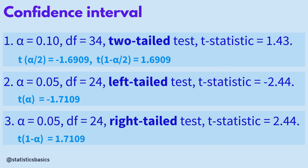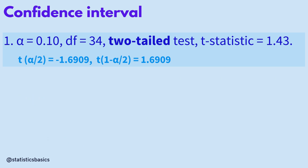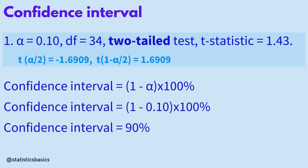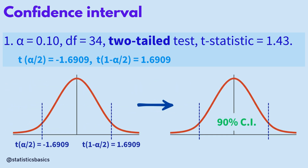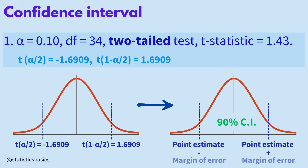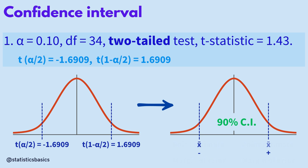Now let's explore the application of the t-distribution table in constructing confidence intervals for the same t-test scenarios. In the first case, a significance level of 0.10 corresponds to a 90% confidence interval. For a two-tailed test, this will be a two-sided 90% confidence interval. To construct the confidence interval, we calculate the lower and upper limits by adding and subtracting the margin of error from the point estimate of the population parameter. The margin of error is calculated using the t-critical values, which we have already found.